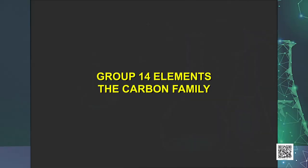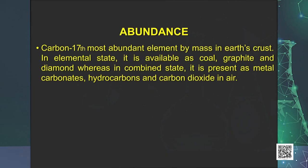Next we move to group 14 elements, also known as the carbon family. Members of group 14 include carbon, silicon, germanium, tin, lead and flerovium. When we talk about abundance, carbon is the 17th most available element by mass in the earth's crust. In elemental state it is available as coal, graphite and diamond, whereas in combined state it is present as metal carbonates, hydrocarbons and carbon dioxide in air.